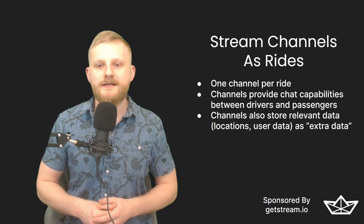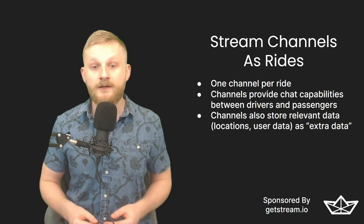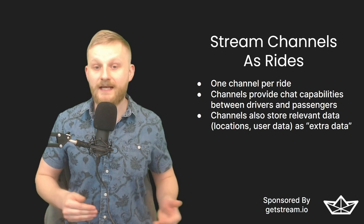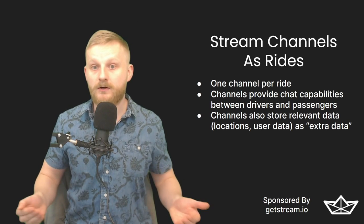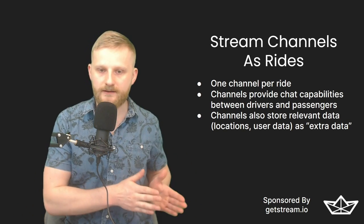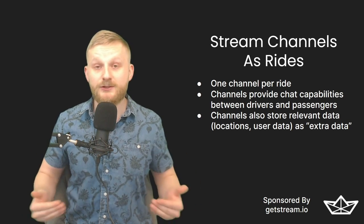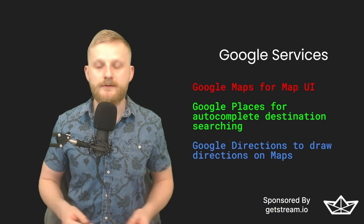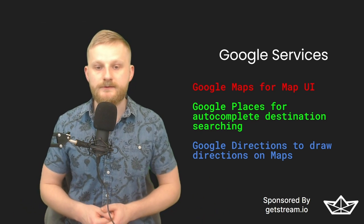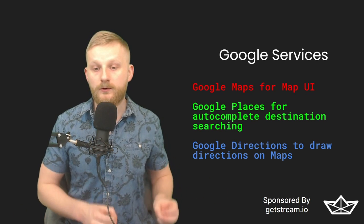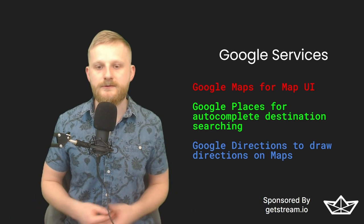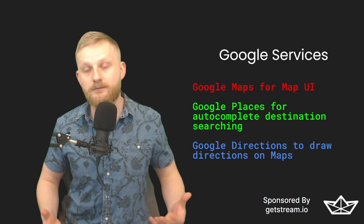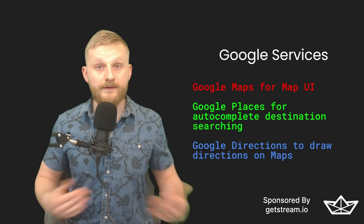Stream actually has integrations with Firebase so that creating a new user in Firebase will also create a user in Stream's servers. We will store the actual user data in Stream except for the profile avatars — we will use Firebase Storage for avatars, but the URL will be stored as part of the user data in Stream. We will not be configuring Firebase in this tutorial — it's just a stand-in for your session management server. Each ride will have a channel in the chat SDK, which will make messaging a breeze as well. For location data, we will use Google services for maps, address searching, and directions.